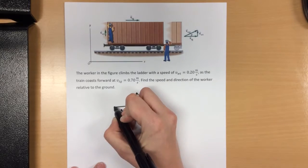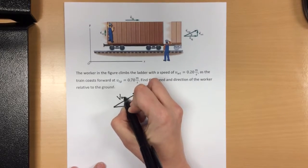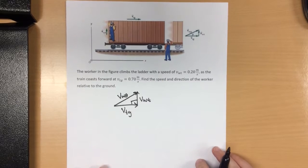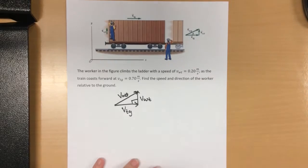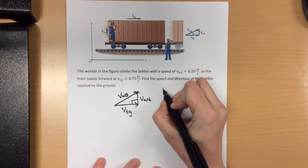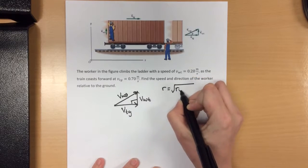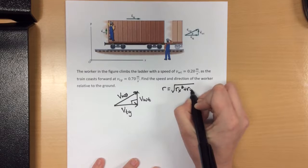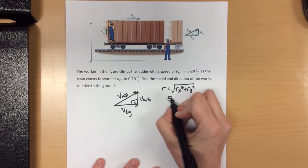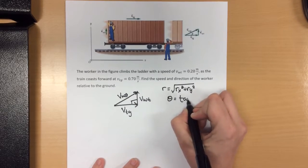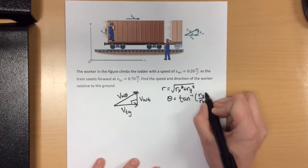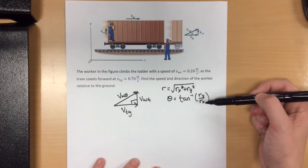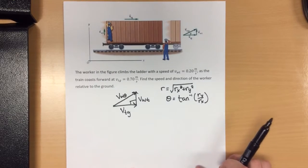When we look at the resultant, the velocity of the worker relative to the ground, we're seeing that that is the hypotenuse of a right triangle. We already know how to solve for the hypotenuse of a right triangle given the tools we've looked at before. We were given this equation and this equation to find both our magnitude and direction of our resultant vector.